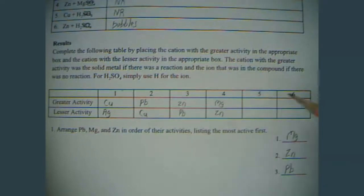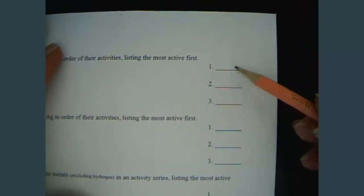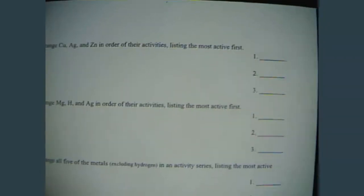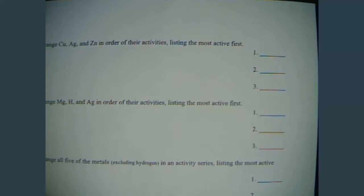So, now, you'll have to do number 5 and number 6. And then, on the back side, there's a few more of these. So, we have this one, this one, and this one. So, we're going to compare copper, silver, and zinc.